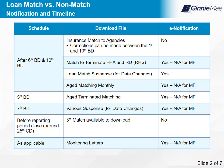Loan matching and suspense is a module of RFS. You will receive an e-notification if there is an error or non-match applicable to you. The errors are accessible on the Downloads tab. Take a moment to review the table outlining the schedule of download files and e-notifications. Select Next to continue when you are ready.